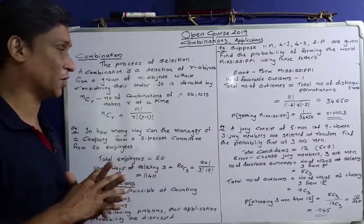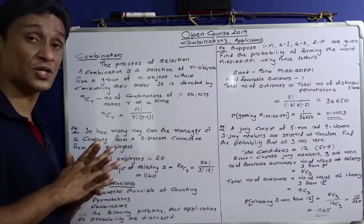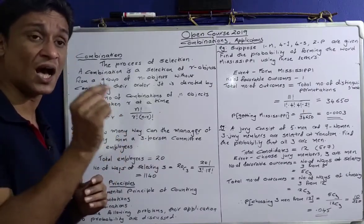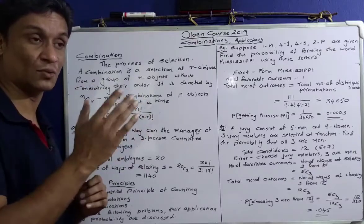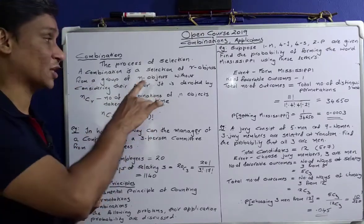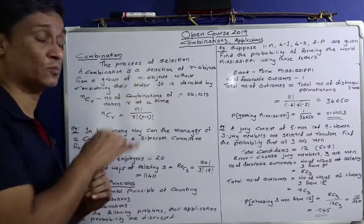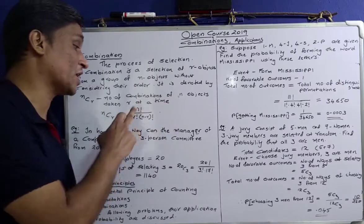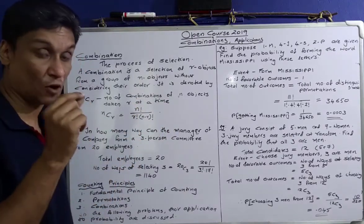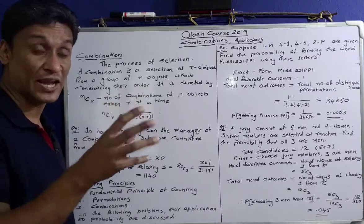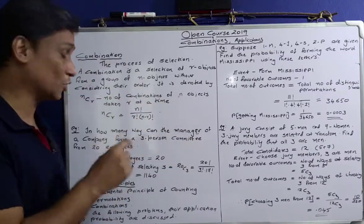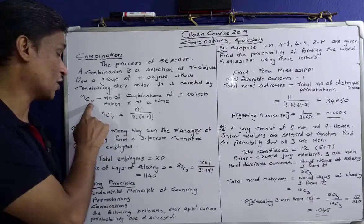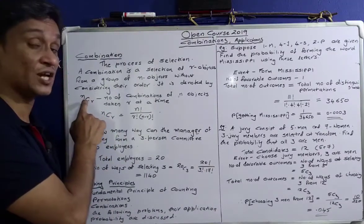If there are n objects and from these n objects we are taking any r — for example, n is 10 and r is 3 — then the selection of r objects from a group of n objects is what we call the number of combinations of n objects taken r at a time, denoted nCr.